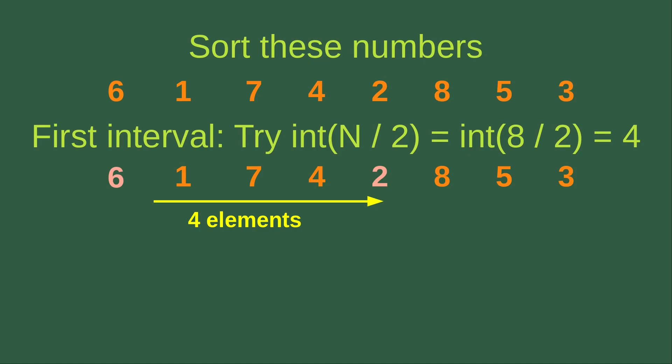8 divided by 2 gives me 4, and the integer part of the quotient is also 4. So that means we just try to sort the elements that are 4 elements apart. At the beginning we have 6, and after 4 more elements we have 2, and we have no further elements separated by 4 positions.